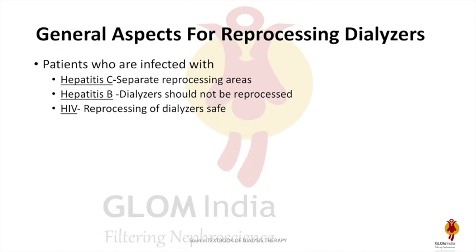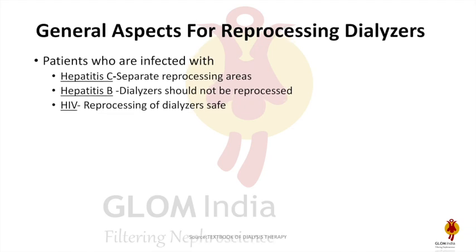For hepatitis C positive patients, ideally a separate reprocessing area should be there. For hepatitis B positive patients, the dialyzer should not be reprocessed. For HIV positive patients, reprocessing of the dialyzer is safe, but still practically in most units, single-use dialyzers are in use.